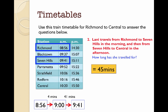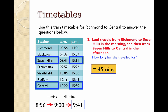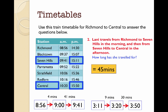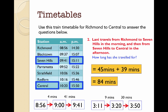Now I want to work out how long she's traveled for in the afternoon. She starts at 3.11 and goes to 3.50. I add nine minutes to get to 3.20, then 30 minutes to get to 3.50 — that's 39 minutes. Adding the morning 45 minutes and afternoon 39 minutes: 45 plus 40 is 85, minus one is 84 minutes. Taking away 60 minutes gives one hour, leaving 24 minutes — so she's traveled for one hour and 24 minutes.